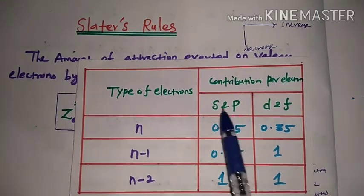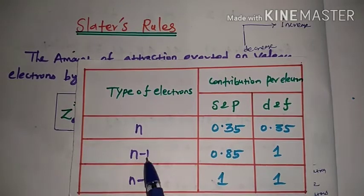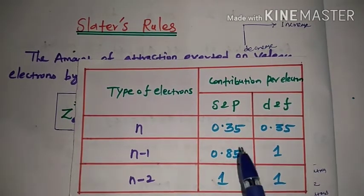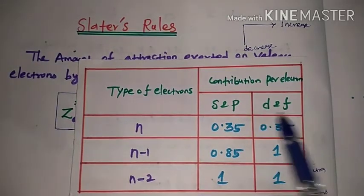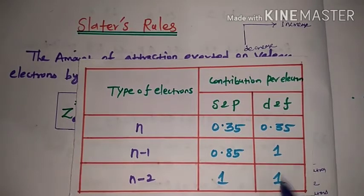For sp type orbitals: the n value is 0.35, the n-1 value is 0.85, and the n-2 value is 1. For df type orbitals: the n value is 0.35 (same value), but n-1 and n-2 are both 1.